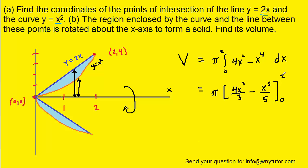Now when evaluating, we're going to plug in the upper limit first. We're going to have π and then we'll have 4 multiplied by 2³ over 3 minus 2⁵ over 5. But then we also have to plug in the lower limit and subtract these two quantities.